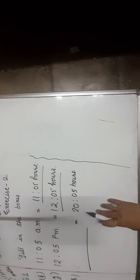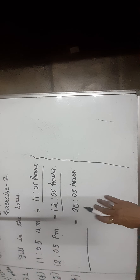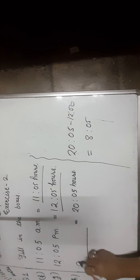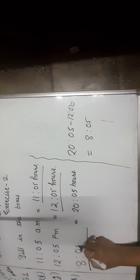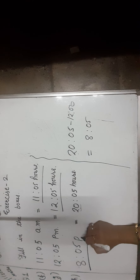Let us convert 20:05 hours from 24-hour clock time into 12-hour clock time. Subtract 12: 20:05 minus 12 equals 8:05. To determine AM or PM: if the number on the left of the 24-hour clock time is more than 12, the time is in PM. Here, 20 is more than 12, so the time is 8:05 PM.